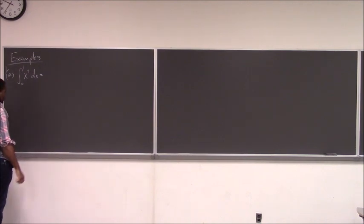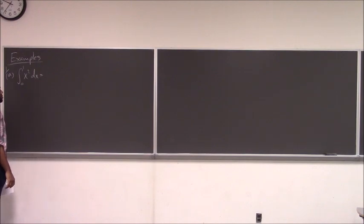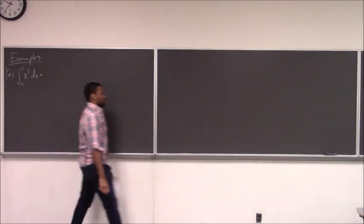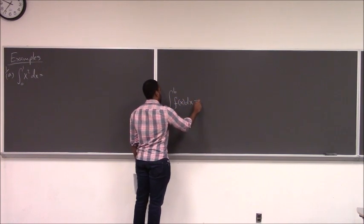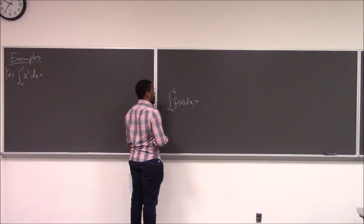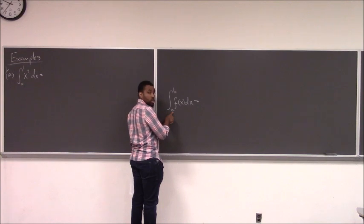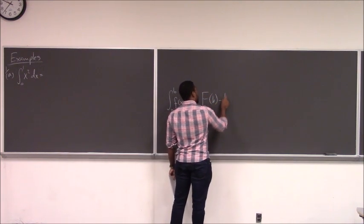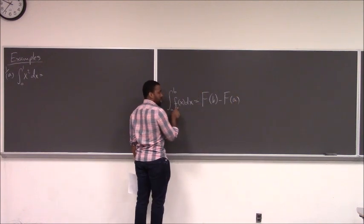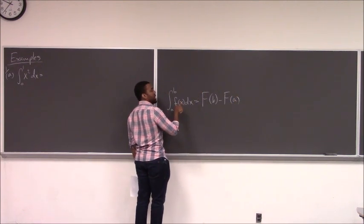How would we do it based on the fundamental theorem? What does the equation of the fundamental theorem say? We can compute this by taking the limit as n approaches infinity — that's the definition. But in the fundamental theorem of calculus, we got a shortcut. The shortcut is big F of B minus big F of A, where big F is the anti-derivative — something that when you differentiate it, you get the original function.